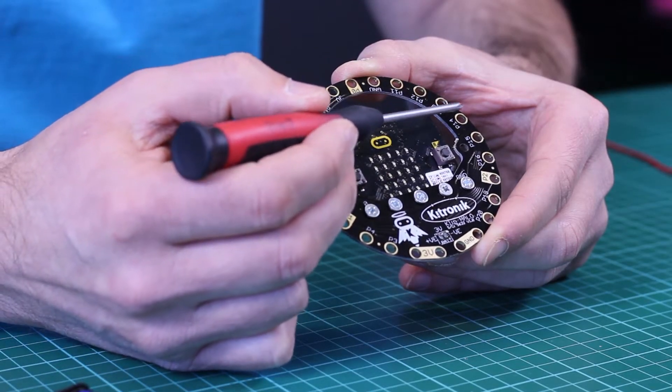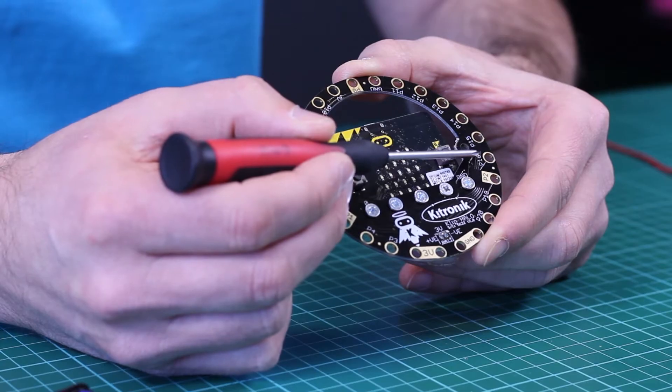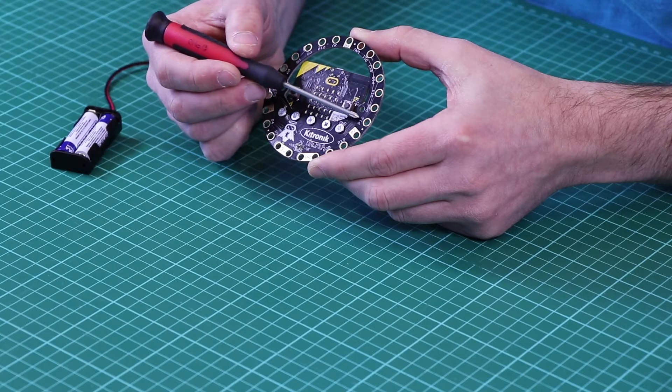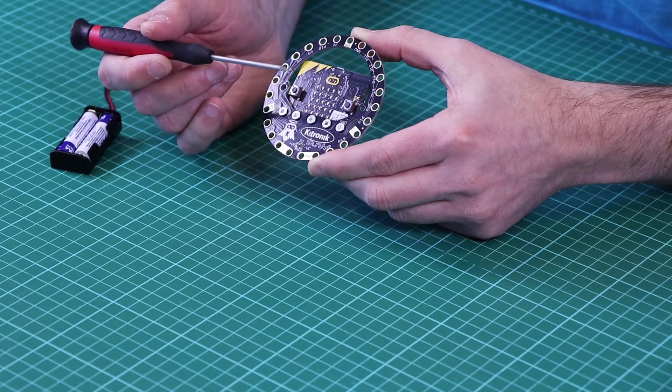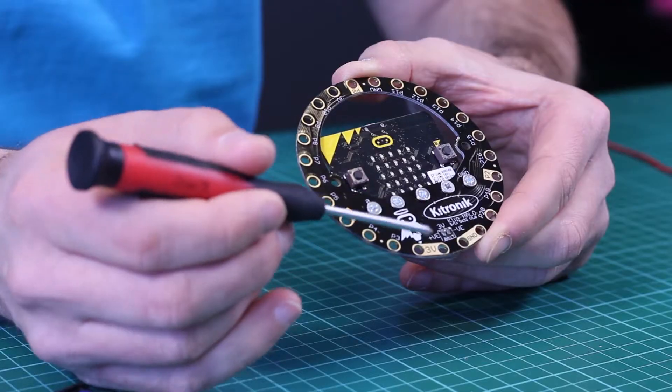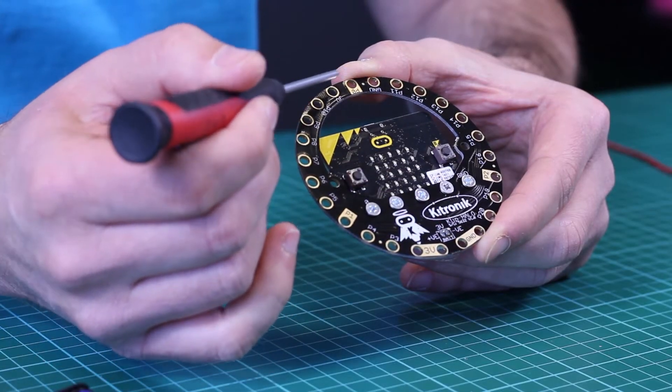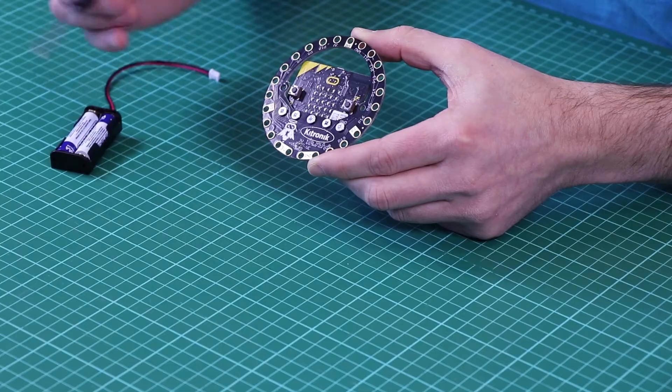All of the micro:bit pins are broken out to connections around the outside. These are clearly labeled so you can identify each - here we have P16, P15, P14, etc. There are also multiple power and ground connections located around the outside.